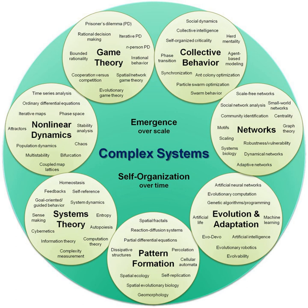Systems biology is a movement that draws on several trends in bioscience research. Proponents describe systems biology as a biology-based interdisciplinary study field that focuses on complex interactions in biological systems, claiming that it uses a new perspective — holism instead of reduction — particularly from the year 2000 onwards. An often stated ambition of systems biology is the modeling and discovery of emergent properties. It is thought that Ludwig von Bertalanffy may have created the term systems biology in 1928.